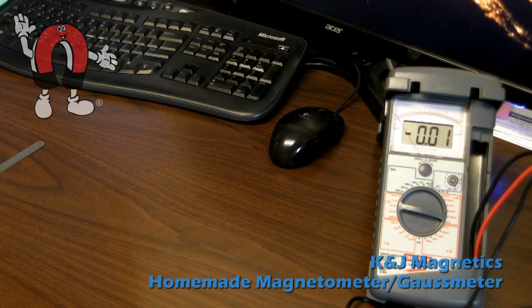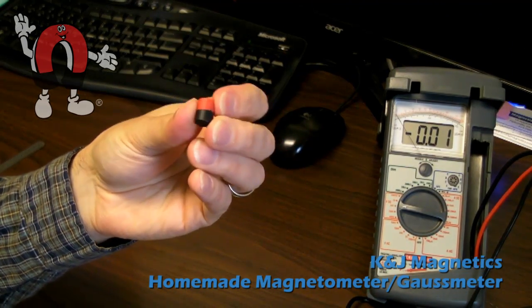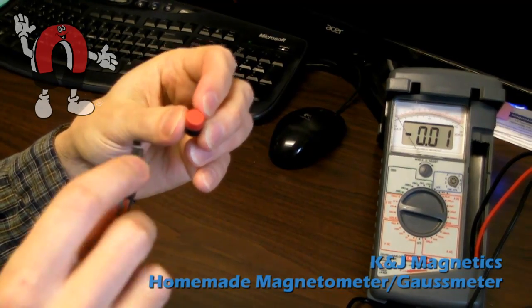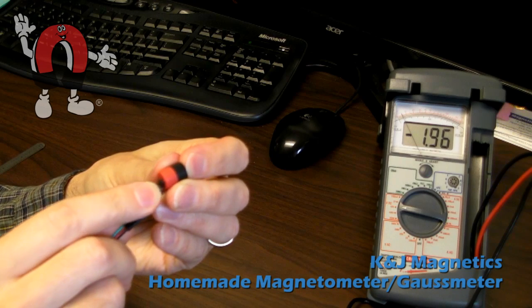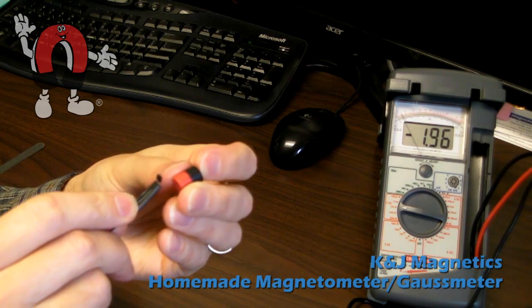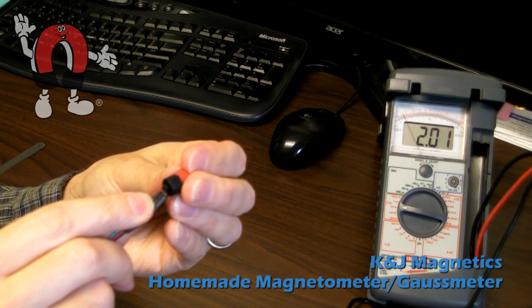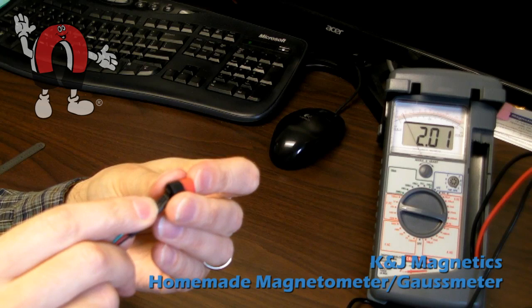So now you're going to get positive and negative numbers depending on which direction you're looking at. This magnet is color-coded so that the north pole is red. When I put this sensor on it, it measures a negative number. I turn the magnet around, it shows a positive. So the way we have this one wired up, it's showing negative for north and positive for south.